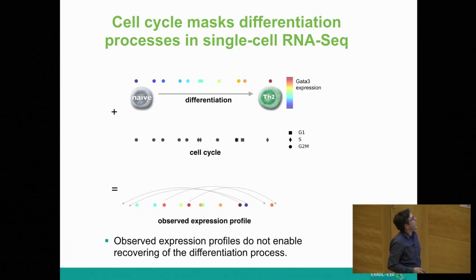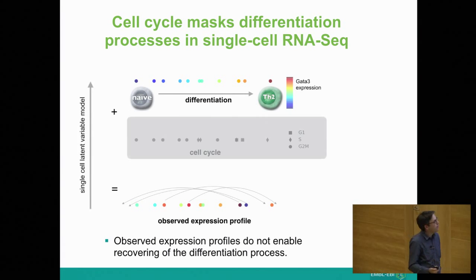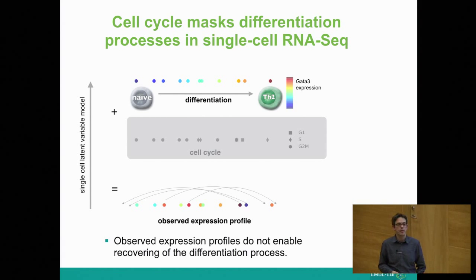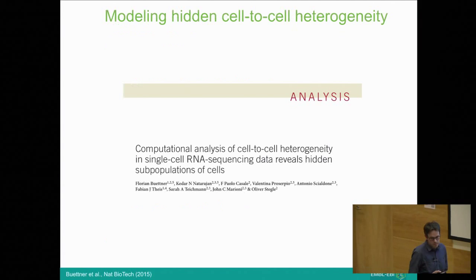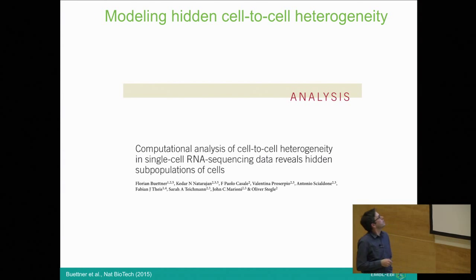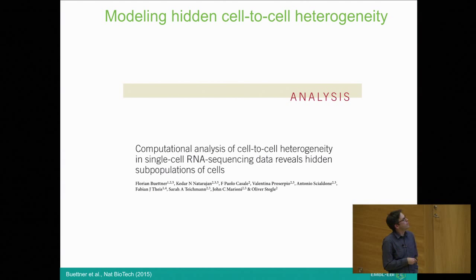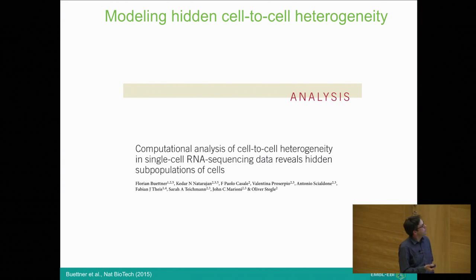We really need to get a handle on this middle layer — the cell cycle — but the difficulty is that it's not even measured; we don't typically assay cell cycle in this experiment. That's a classical example of a latent variable you want to estimate from data, to then clean your observed expression data to something that looks more like the idealized picture. The main work I'm describing is a paper with Florian Buettner, and many people at EBI and Sanger including John Marioni and Sarah Teichmann.